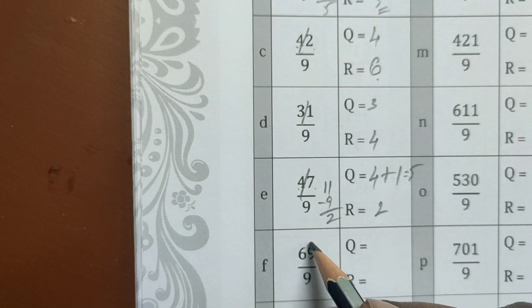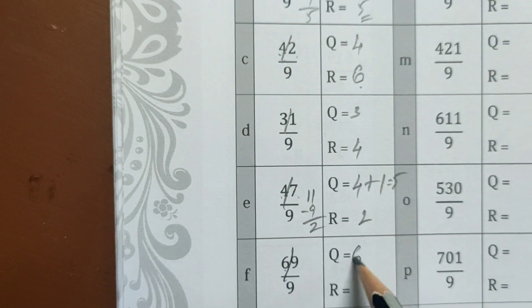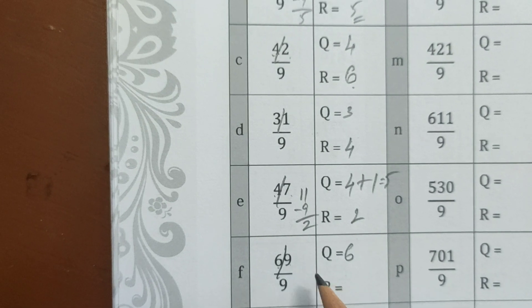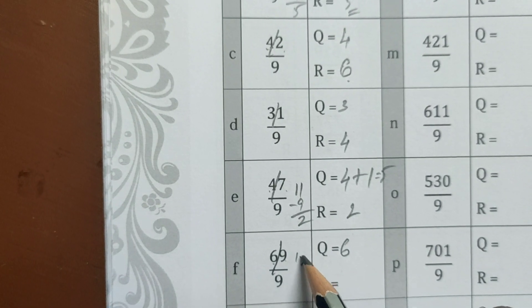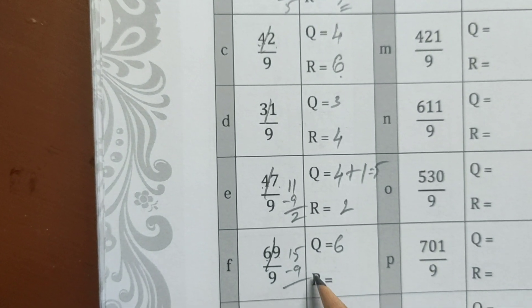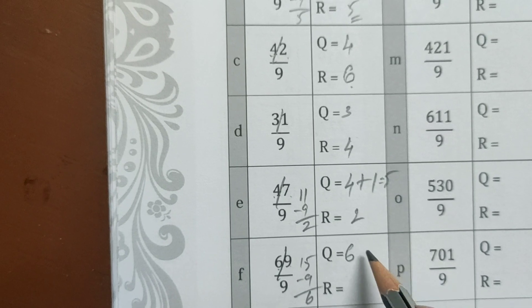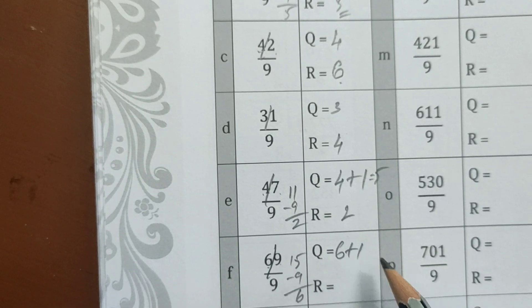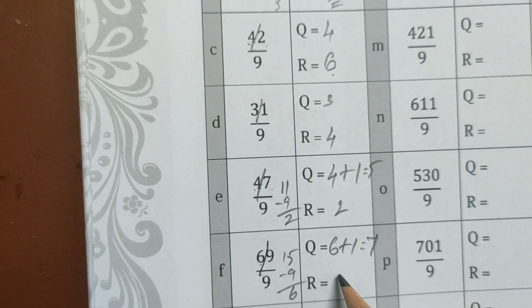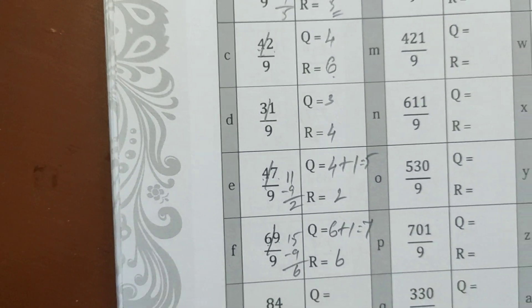69 divided by 9. 6 quotient, remainder 15. 15 is more than 9, so we have 1 nine. So 7 quotient, remainder 6. Remainder 6 is the answer.